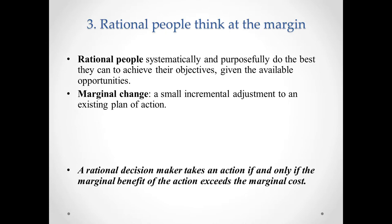The third principle is: rational people think at the margin. In economics it is normally assumed that people are rational — they systematically and purposefully do the best they can to achieve their objectives given available opportunities, and they always think at the margin. A marginal change is a small, incremental adjustment to an existing plan of action. For example, when exams approach, your decision is not between skipping study entirely or studying 24 hours a day, but whether to spend an extra hour revising your notes instead of watching TV. Every rational person makes decisions by comparing marginal benefits and marginal costs.